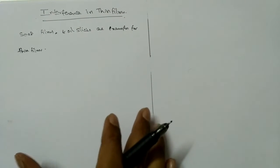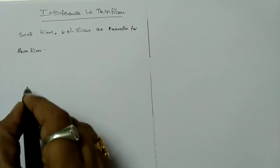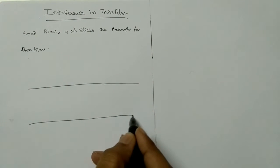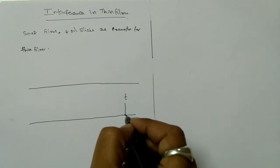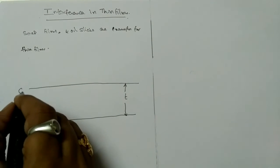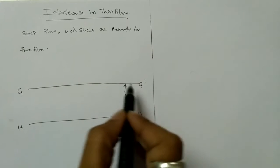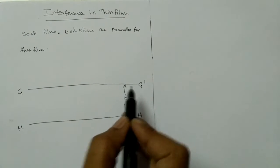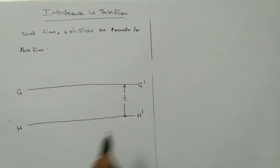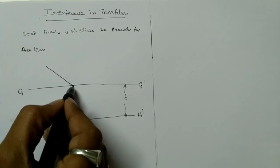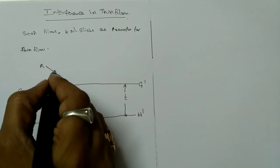For thin films we have to consider two surfaces: the upper surface and the lower surface. Let us consider a thin film of thickness t. GG' represents the upper surface of the thin film and HH' represents the lower surface of the thin film.